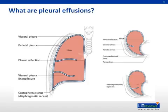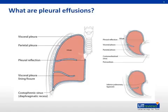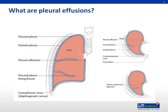Really, this is a potential space, since it holds very small volumes of fluid — about 2 milliliters for lubrication — at baseline, but has the capacity to hold much more. The fluid is constantly being turned over and is drained by local lymphatics. When fluid production increases, the lymphatic drainage system can get overwhelmed. The net increase in volume is called a pleural effusion.